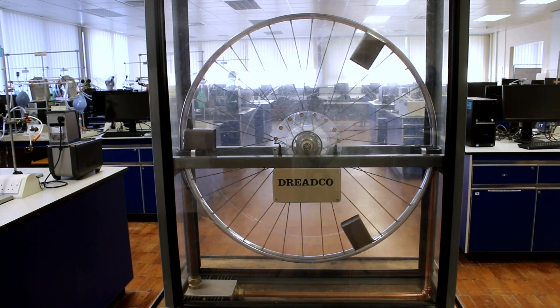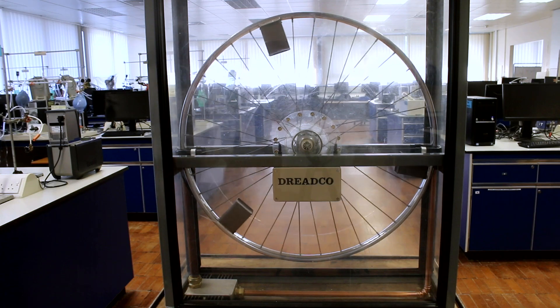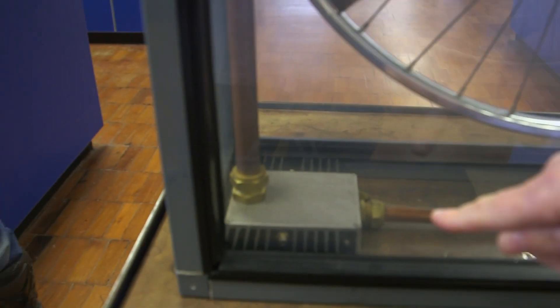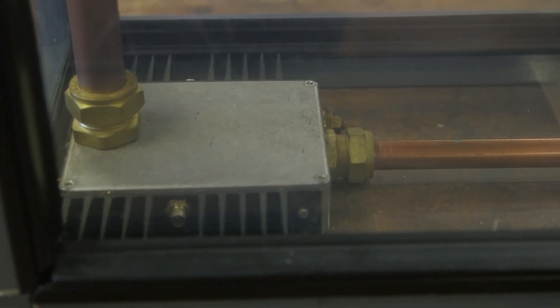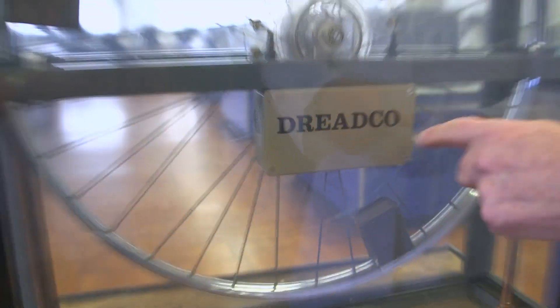Come and let me show you it a bit closer. It's a bicycle wheel, a perfectly standard bicycle wheel, with three funny boxes on it, a copper stand, something down here with heat sinks on it, things that look as if they might be magnets round there, and a box here labelled Dreadco.